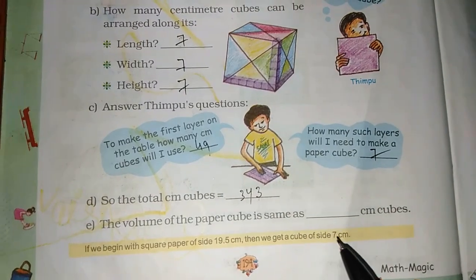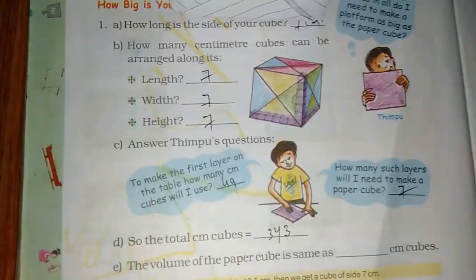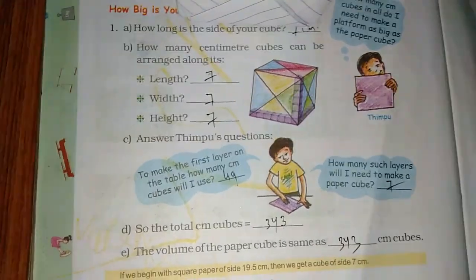The volume of the paper cube is the same as—yes. So, how much is the volume of the paper cube? 343 centimeter cubes.